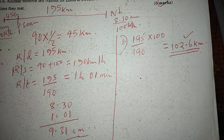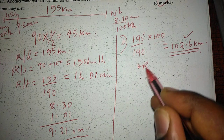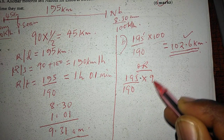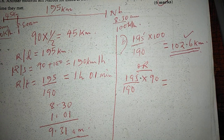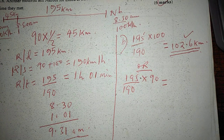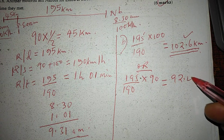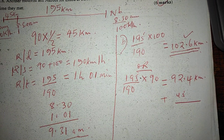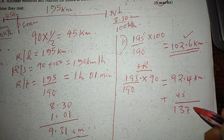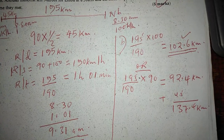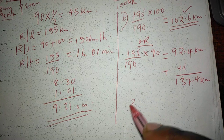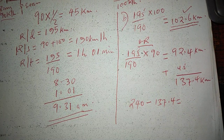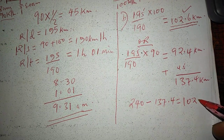Alternatively, we can consider the first motorist, who also takes the same time to meet the other one. He is going at a speed of 90, so we take 195 times 90 divided by 190, giving us 92.4 kilometers. He has already covered 45 kilometers from Mbu, so they are meeting at 137.4 kilometers from Mbu. Since the total distance is 240, we take 240 minus 137.4 and get 102.6 kilometers — the same answer.